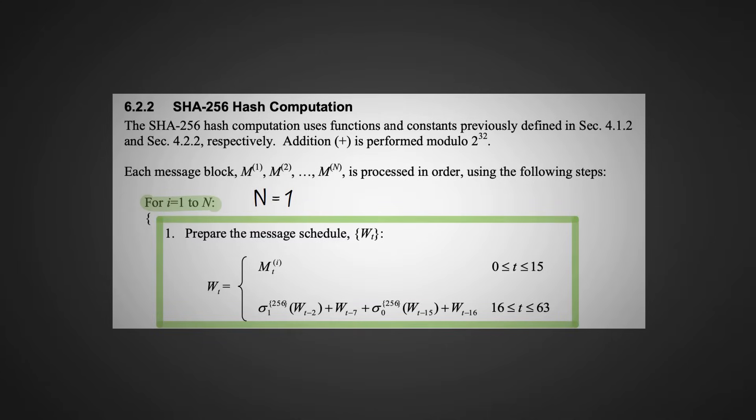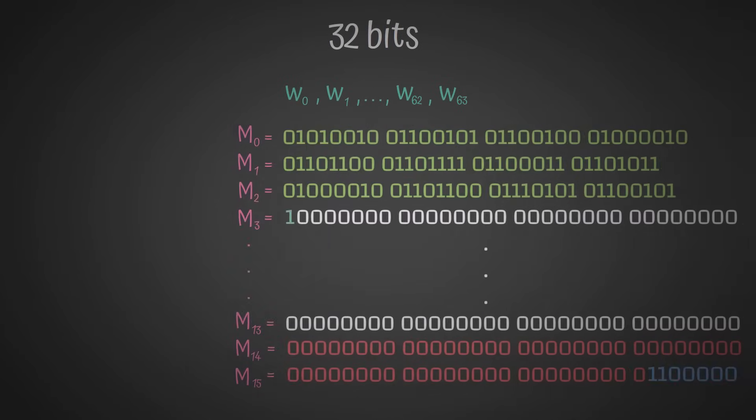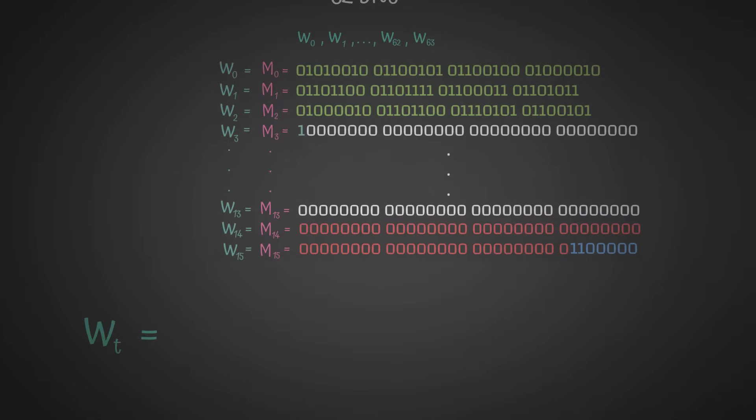We have to prepare something called a message schedule, which is these W_t things from W0 to W63. Each of these are 32 bits in length. The first 16 are just equal to M0 to M15. Then W16 up until W63 is given iteratively by this formula.